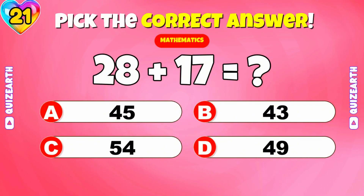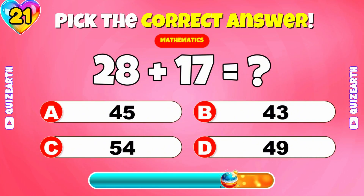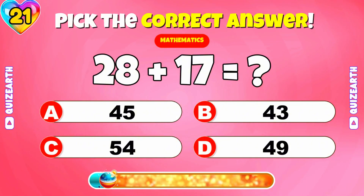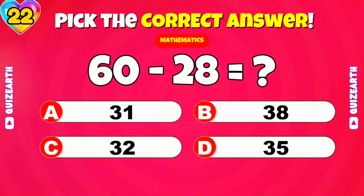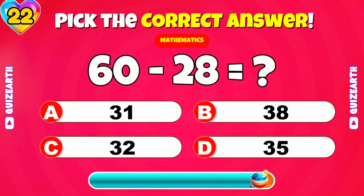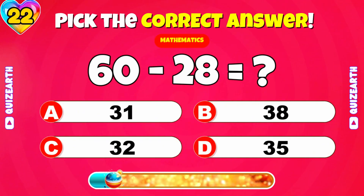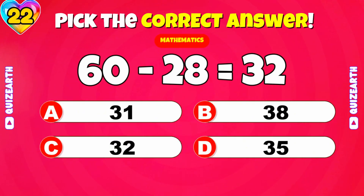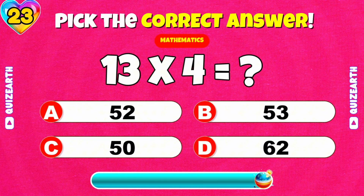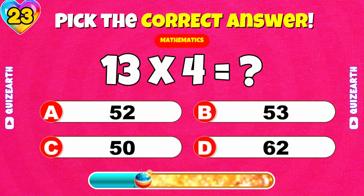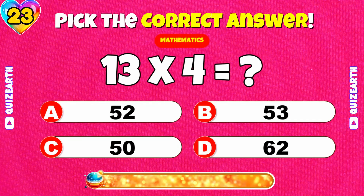What is 28 plus 17? 45. What is 60 minus 28? 32. What is 13 times 4? 52.